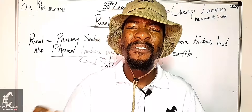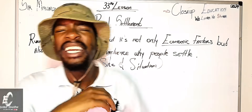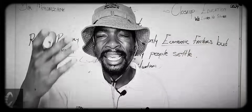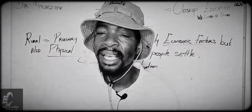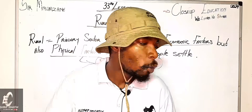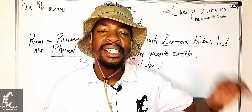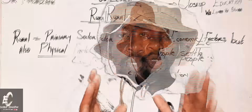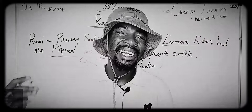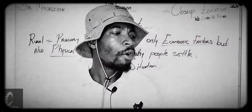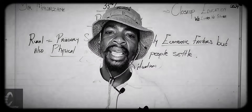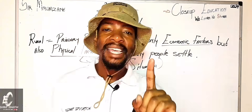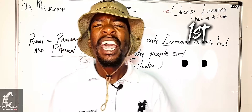Now we need to name the most important physical factors that lead people to decide to settle. Let's go back to your great-grandfather's mindset — because today you're full of cell phones and internet, you'd just ask ChatGPT 'is this area suitable for me to settle with my family?' But going back to your great-grandfather, what would he do? He would look at the physical features of the area.